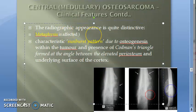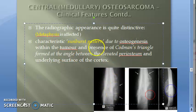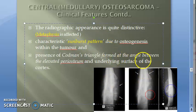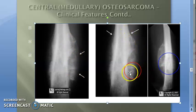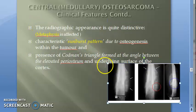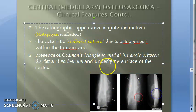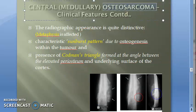The sunburst pattern is seen due to osteogenesis. There is also a Codman's triangle, which is formed between the elevated periosteum and the underlying surface of the cortex. The periosteum is lifted, forming a triangular appearance with the underlying cortical surface. So remember: sunburst pattern and Codman's triangle are the classic radiological findings in osteosarcoma.